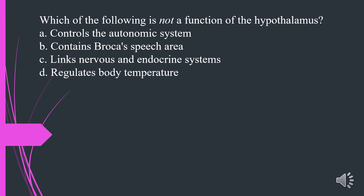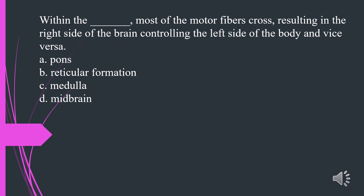Which of the following is not a function of the hypothalamus? A. Controls the autonomic system. B. Contains Broca's speech area. C. Links nervous and endocrine systems. D. Regulates body temperature. The answer is B. Contains Broca's speech area.